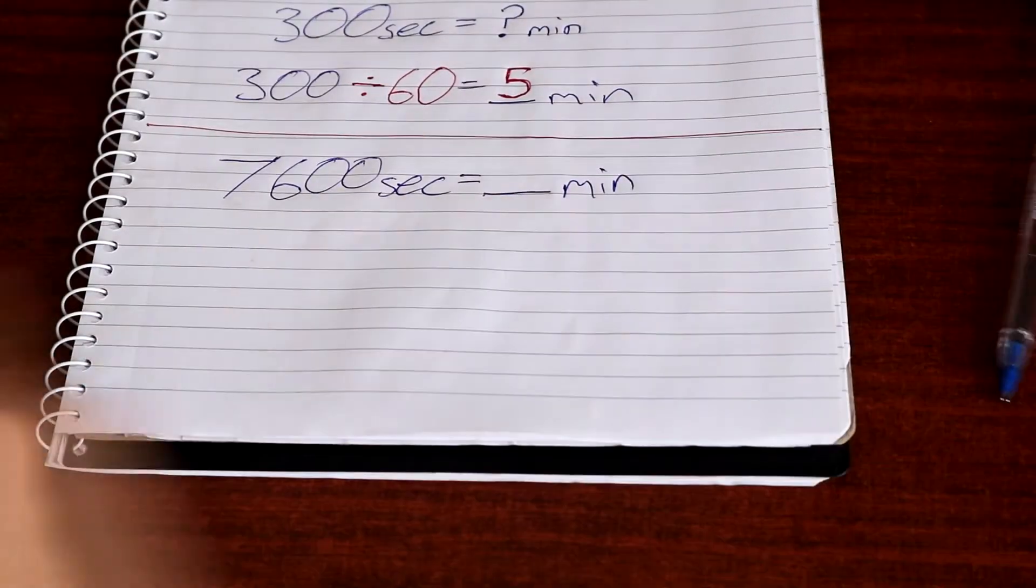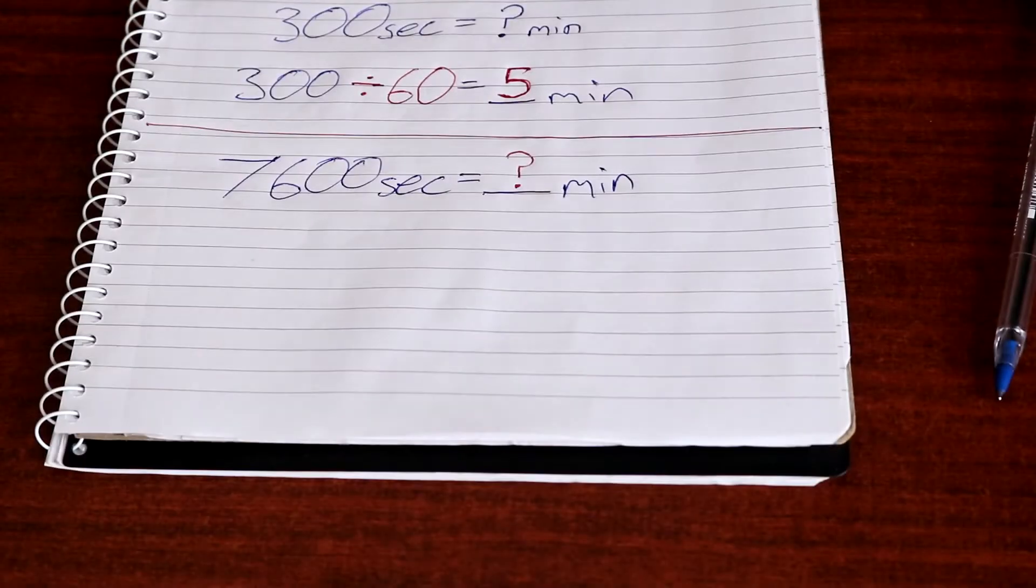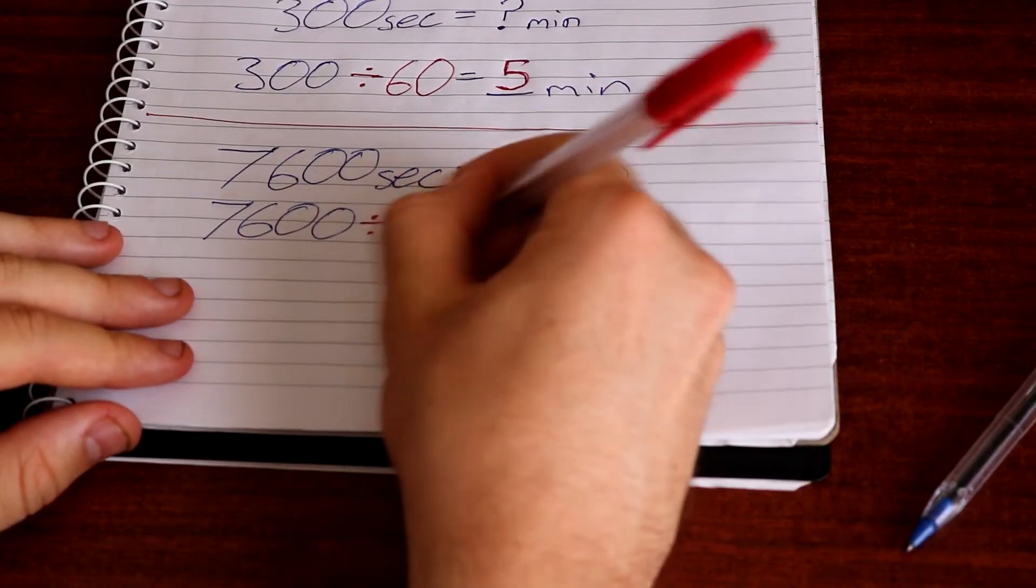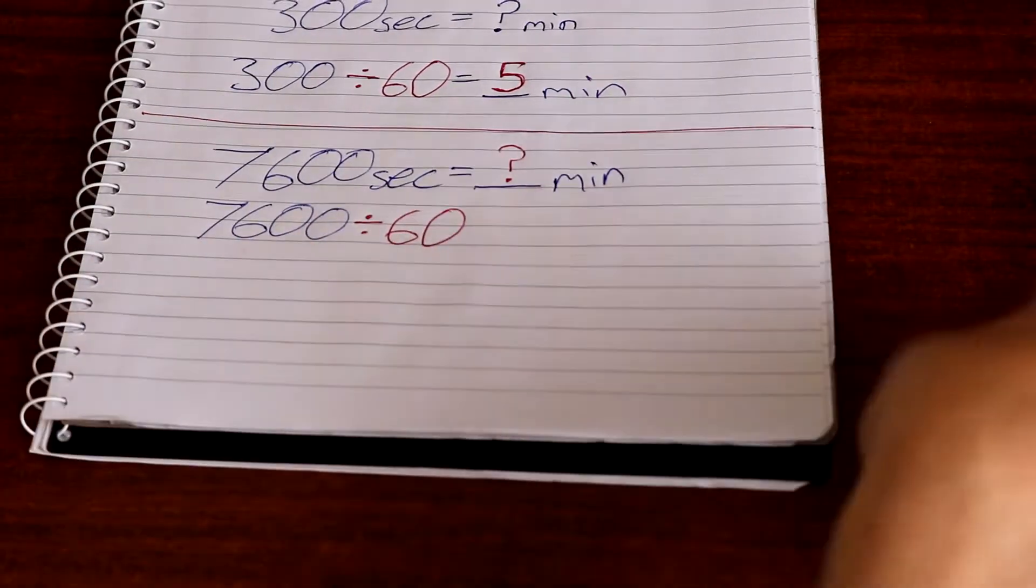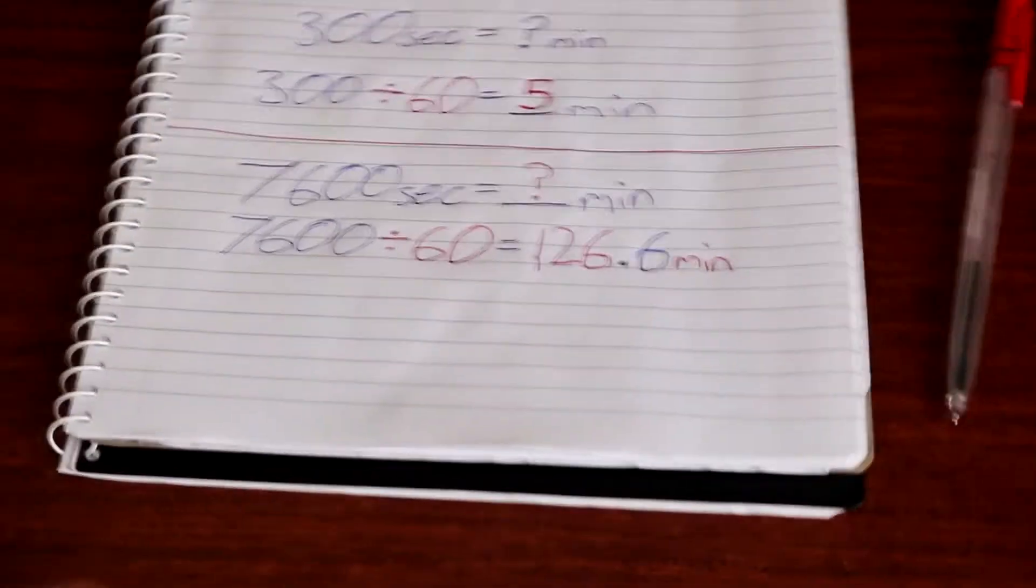Let's say you've got 7,600 seconds and you're trying to find out how many minutes that is. What you need to do is divide 7,600 by 60, which will end up giving you 126.6 minutes.